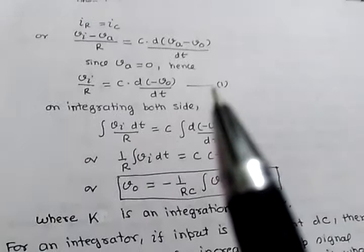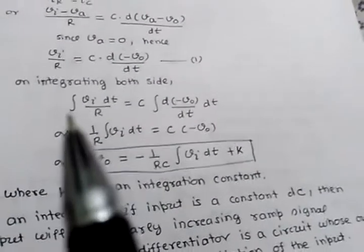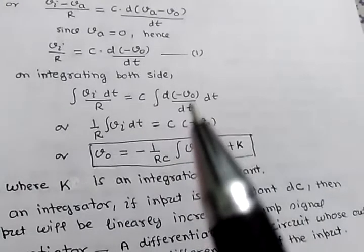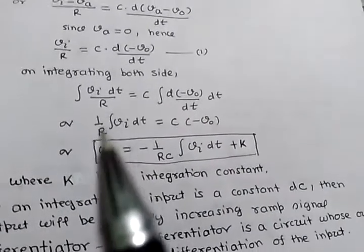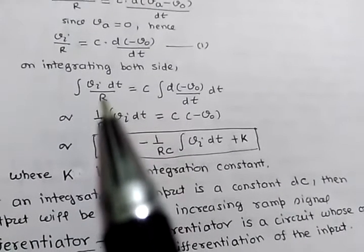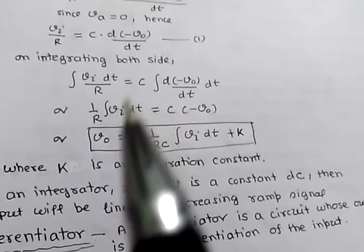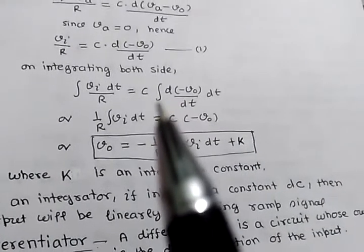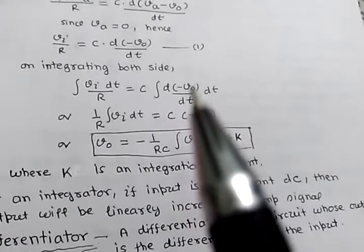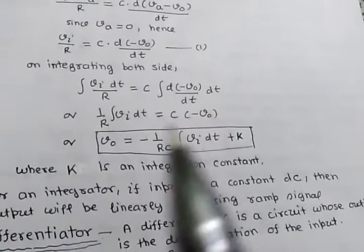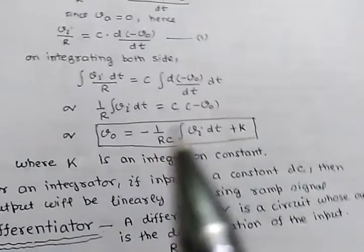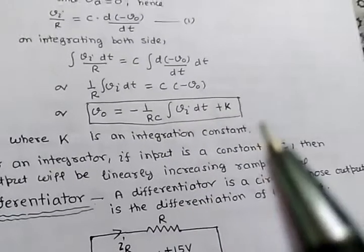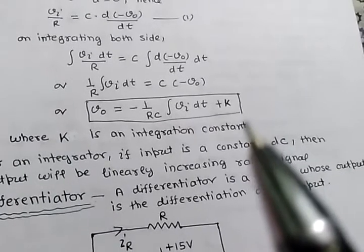Now integrate equation number 1 on both sides. We can write: integration of Vi dt upon R equals C into integration of d(minus Vo)/dt dt. Since R is constant, 1/R times the integration of Vi dt equals C into minus Vo. The integration and differentiation cancel on the same variable, giving minus Vo. Therefore, VO equals minus 1 upon RC times the integration of Vi dt plus K, where K is the integration constant.